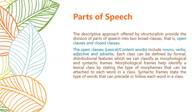Morphological frames help identify a lexical class by stating the type of morphemes that can be attached to each word in a class. Syntactic frames state the type of words that can precede or follow each word in a class. In morphological frames you identify whether something is a noun, verb, adverb, and you also get prefixes and suffixes — affixation. In syntactic frames you see the order: subject–verb–object, or subject and predicate.